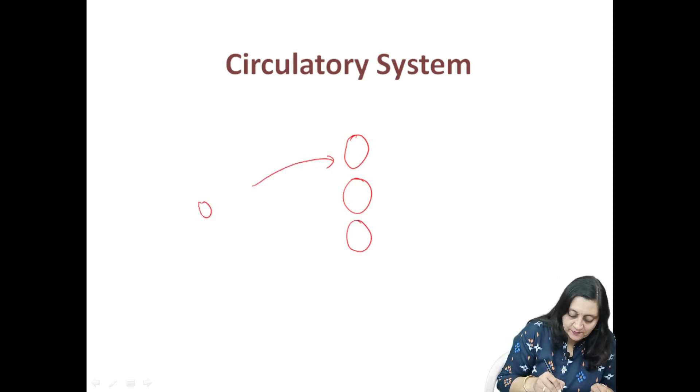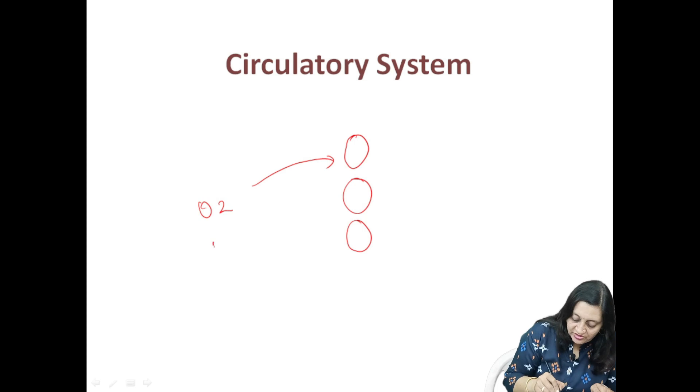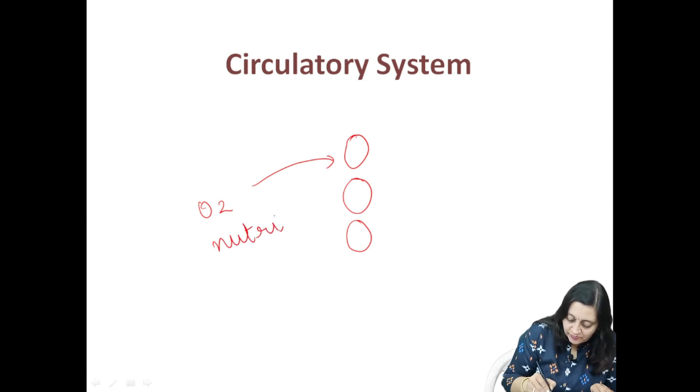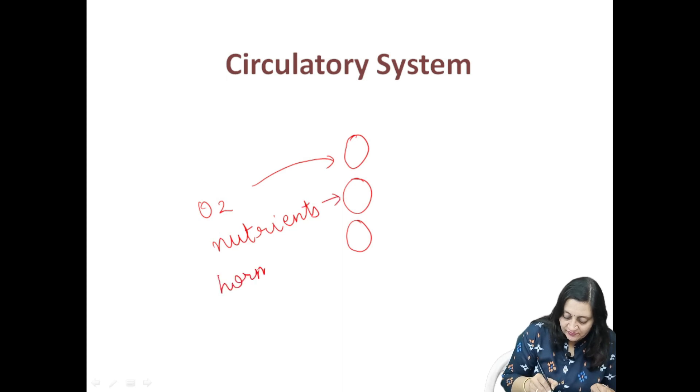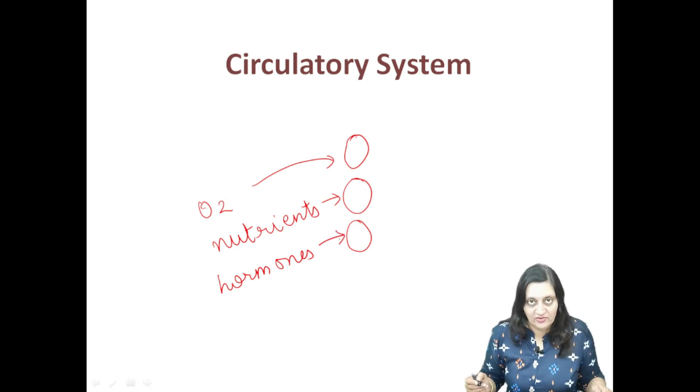Before coming to the main topic, let us first understand what is the need of the circulatory system in our body. We all know that we are multicellular organisms, that is, made up of many cells. All these cells which make our body require oxygen, nutrients, hormones, etc. for their growth and development.